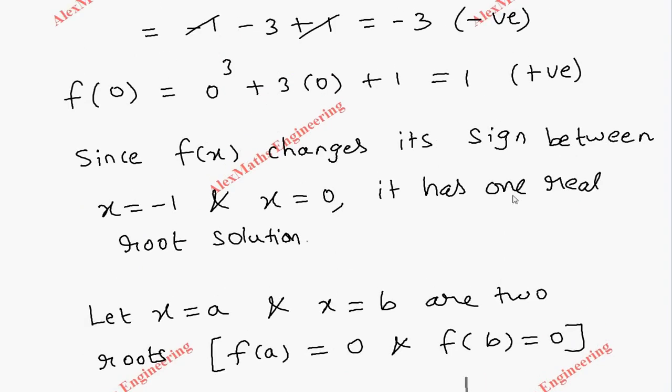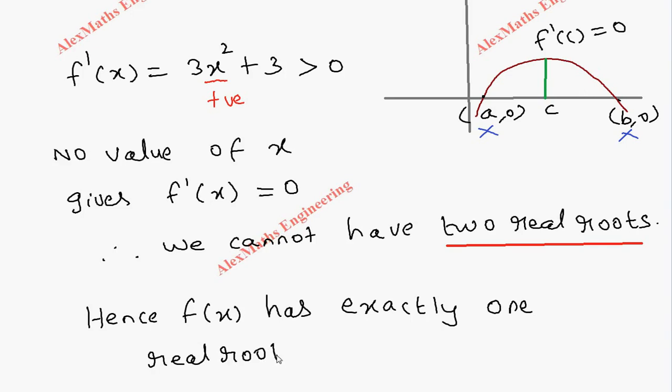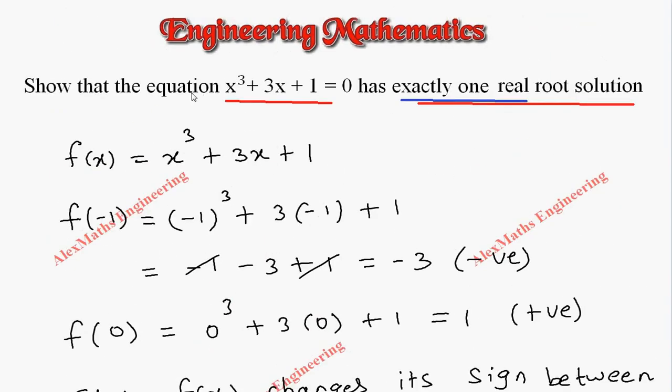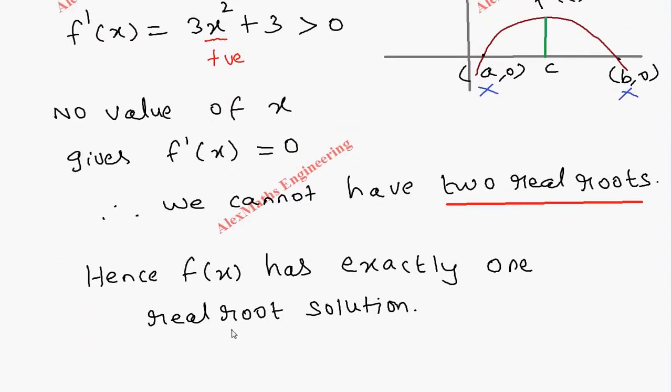Therefore, we cannot have two roots. So already we proved that it is having one real root solution. Now we prove that we cannot have two real roots, given the value c doesn't exist. Hence, f(x) has exactly one real root solution. According to the question, we have to prove the given equation has exactly one real root solution, and we got it has exactly one real root solution.